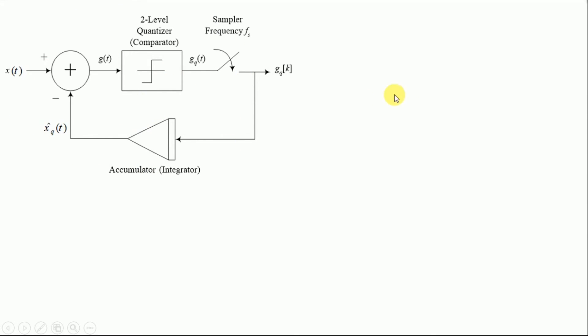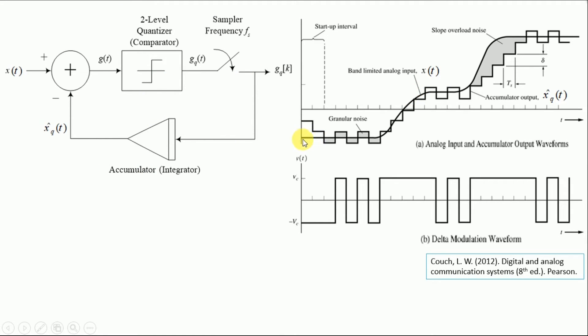Now let us understand this further by means of this plot. This is our signal x of t which is input analog signal and then we have a zigzag pattern. And this pattern is basically our accumulator output which should be over here. So this is x hat q of t. So the accumulator is triggered based on this comparator.